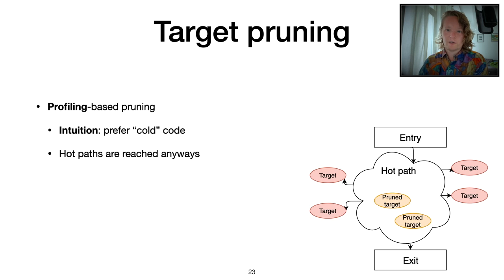If you have a look at this picture over here to the right, it's basically you have a program with a hot path where you reach all these checks anyways with most of the input. And then you have the cold path with these targets that are outside that. And we actually want to actively try to reach these rare paths.